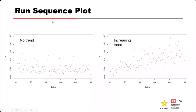A run sequence plot means we simply plot our data in order — usually over time — to look for trends. The one on the left shows no obvious trend. The one on the right suggests two trends: values appear to be generally increasing over time, and the variability — the range of the values — also looks like it might be increasing over time. So you can make interpretations like that from your data just by plotting it in sequence.